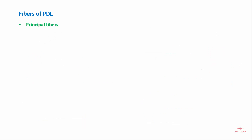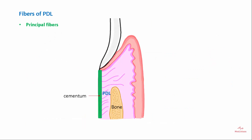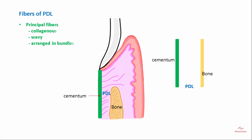The principal fibers of the periodontal ligament are present between the cementum and the alveolar bone. They are collagenous, wavy, and arranged in bundles. The terminal ends of the principal fibers attached to the cementum and alveolar bone are called Sharpey's fibers.